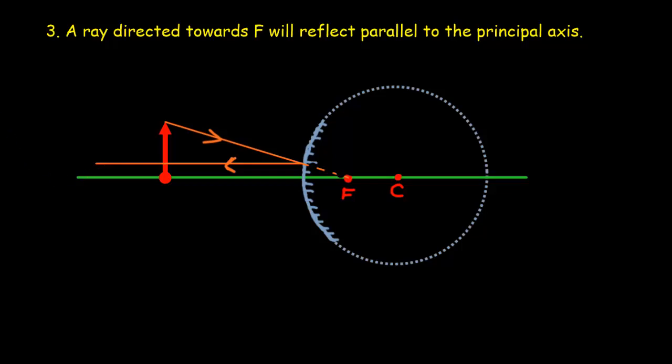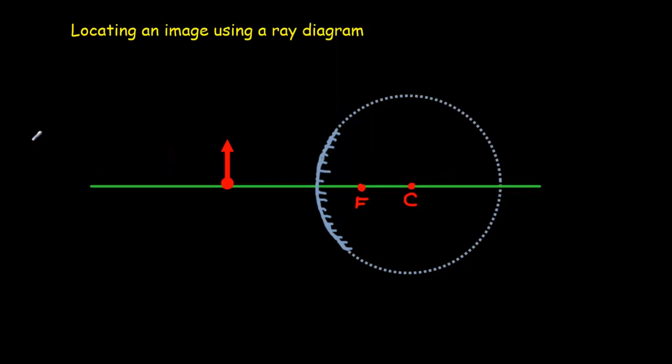Now what we'd like to do is a ray diagram so that we can locate the image. We can use any two rules to do that. I think a simple one to do would be one that comes in parallel to the principal axis. It should reflect away from F. I'll make this a dotted line, no real light back behind the mirror. This is an incident and this is the outgoing reflected ray.